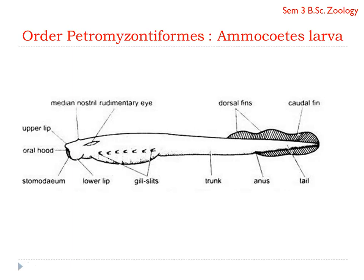Ammocoetes larvae is quite different from that of the adult. It is a tiny transparent organism, almost similar to that of the Amphioxus in structure. The body of Ammocoetes larvae is thin and laterally compressed. It has a continuous median fin fold, which is differentiated into the dorsal fin, the caudal fin, as well as the anal fin.